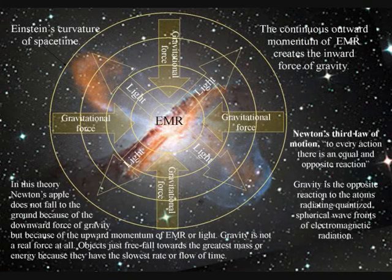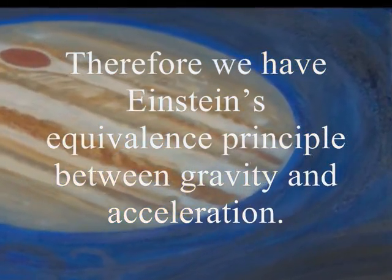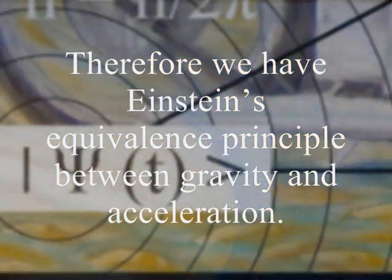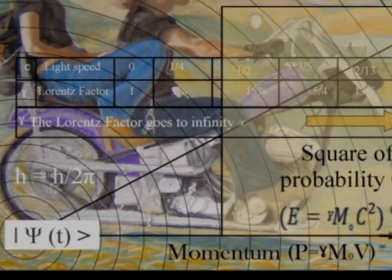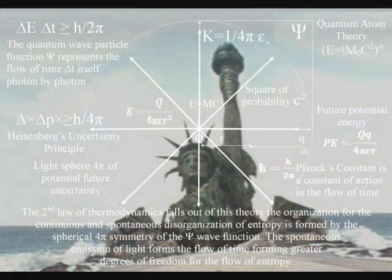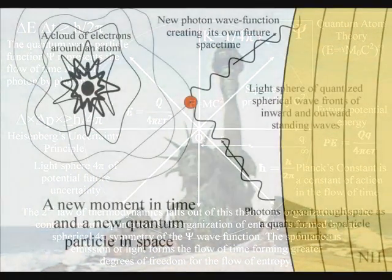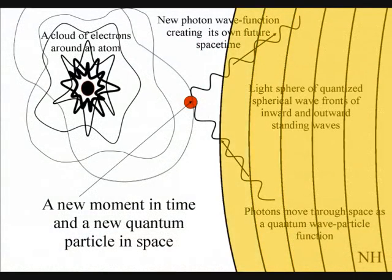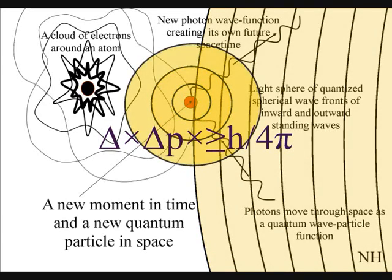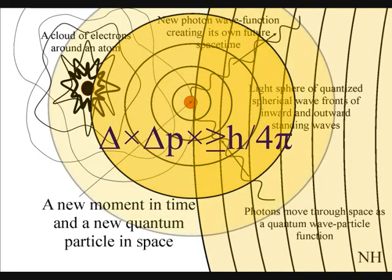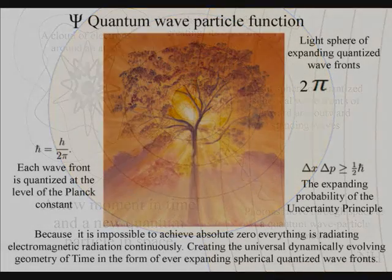In this theory, gravity is a secondary force to the electromagnetic force. Objects just freefall towards the greatest mass or energy, because it has the slowest rate that time flows. The second law of thermodynamics falls out of this theory. The organization for the spontaneous disorganization of entropy is formed by the spherical symmetry of the quantum wave particle function. The spontaneous absorption and emission of light forms the flow of time, with photon energy cascading down.